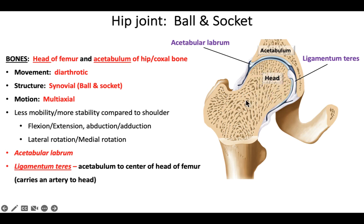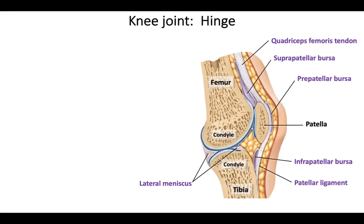If you dislocate your hip, it can tear the ligamentum teres and rupture that artery. If not repaired quickly, the head of the femur could die due to loss of blood flow, requiring a complete hip replacement. The good news is it's very difficult to dislocate a hip, but when it does happen, doctors must closely examine the ligamentum teres and blood vessel to ensure the femoral head can be re-nourished.